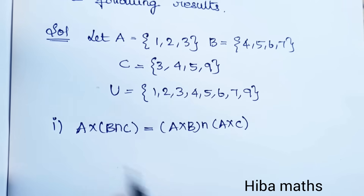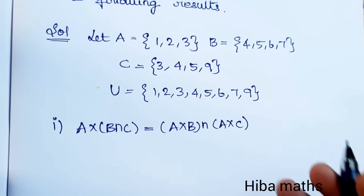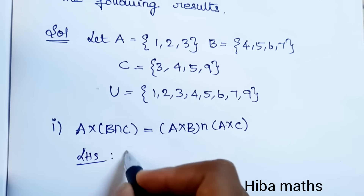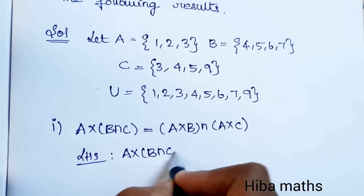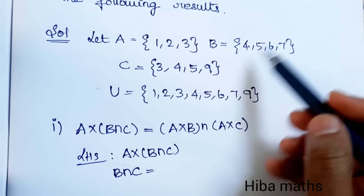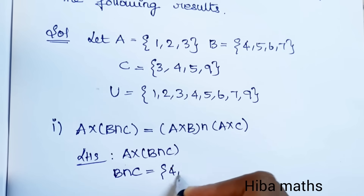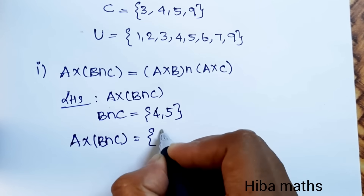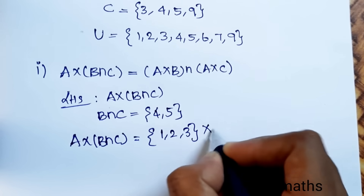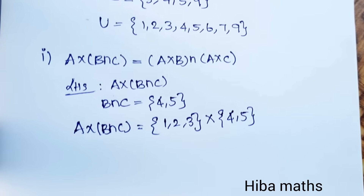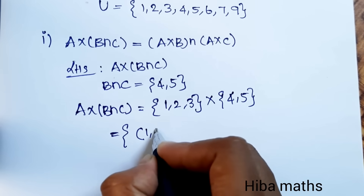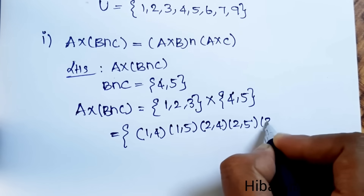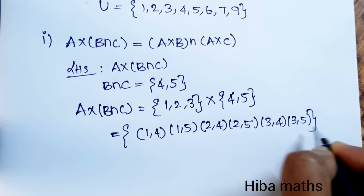First subdivision: A×(B∩C) = (A×B)∩(A×C). Let's compute the LHS first. B∩C means elements common to both B and C, which are 4 and 5. So B∩C = {4,5}. Now A×(B∩C) = {1,2,3} × {4,5} gives us: (1,4),(1,5),(2,4),(2,5),(3,4),(3,5).